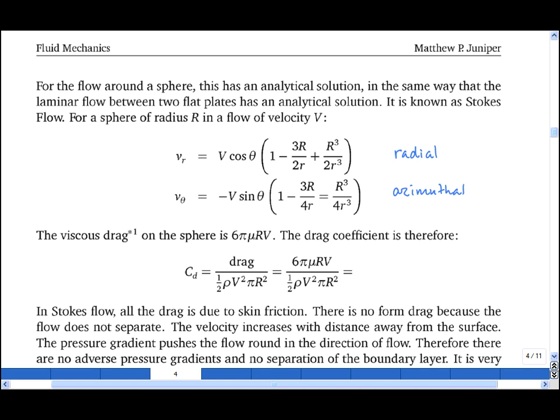If we then work out the drag coefficient using πr², the cross-sectional area of the sphere at its widest point, as the characteristic area, then we find that the drag coefficient is simply 24 divided by the Reynolds number, where the Reynolds number is defined as ρvd, the diameter of the sphere, divided by μ, the viscosity.